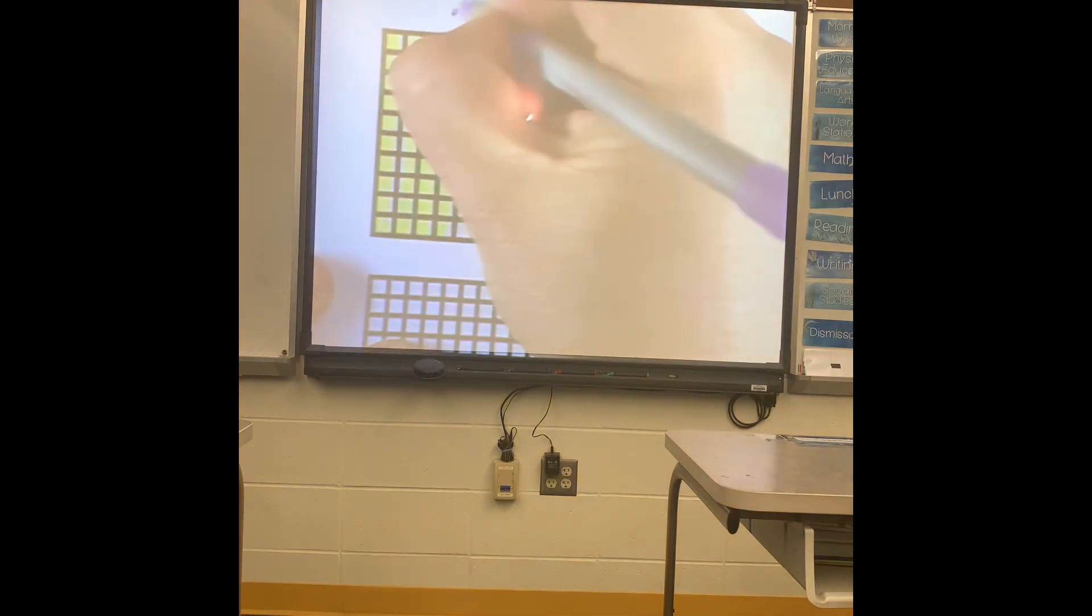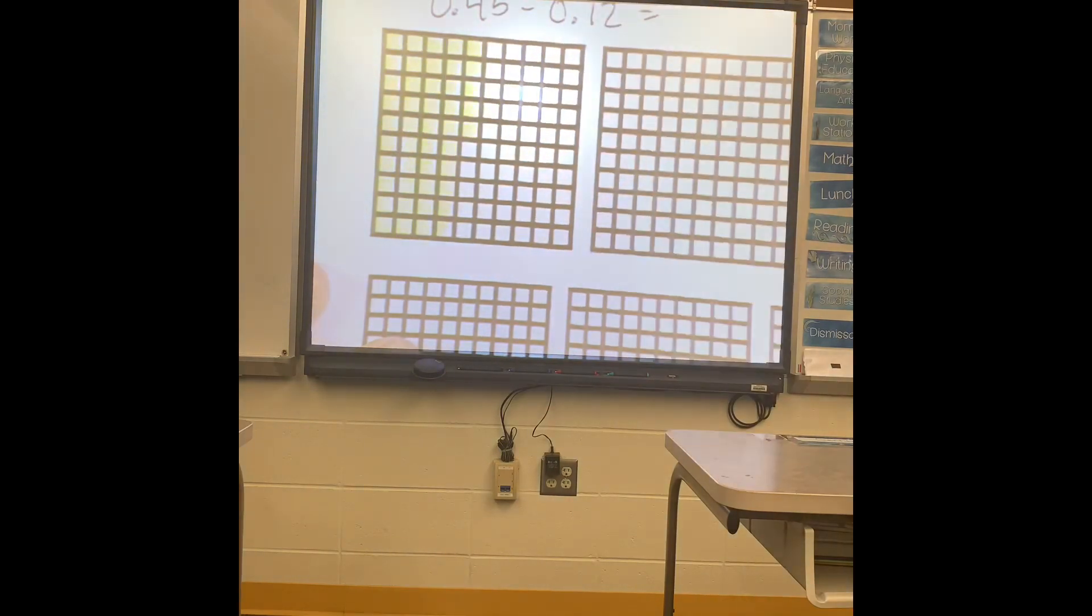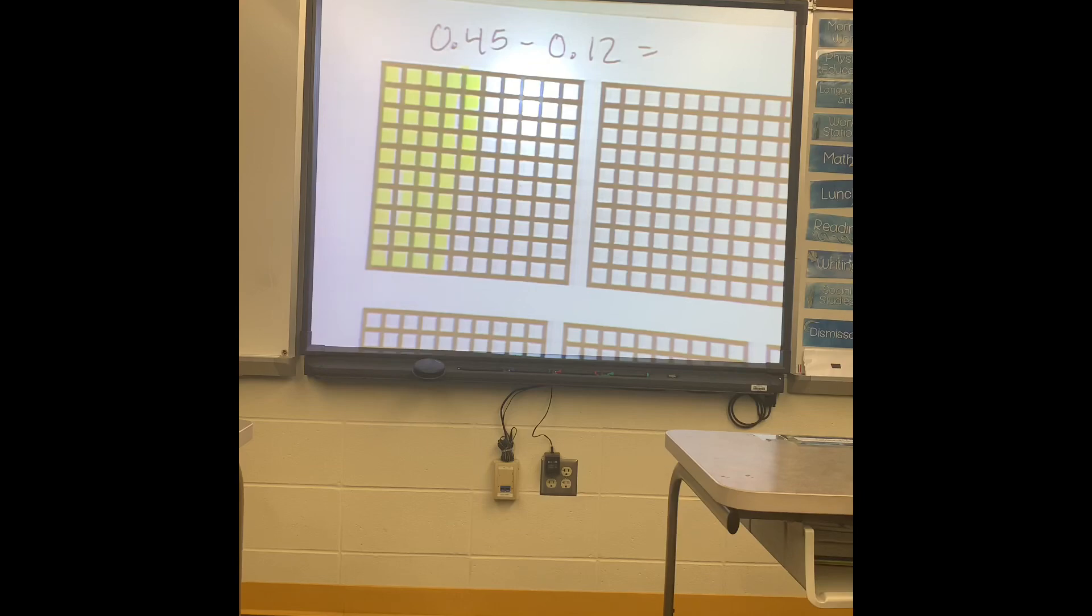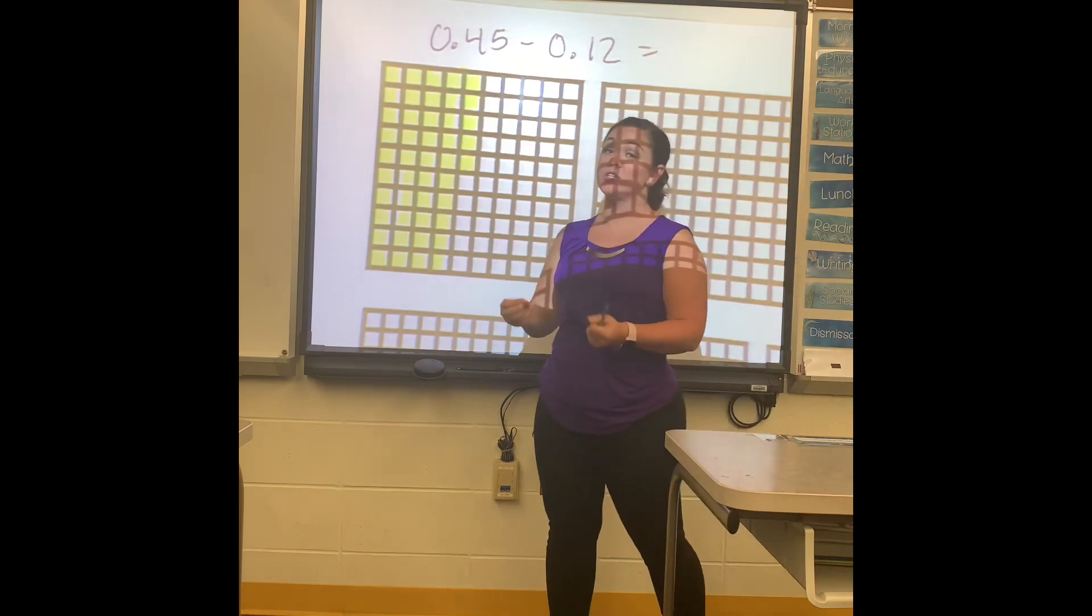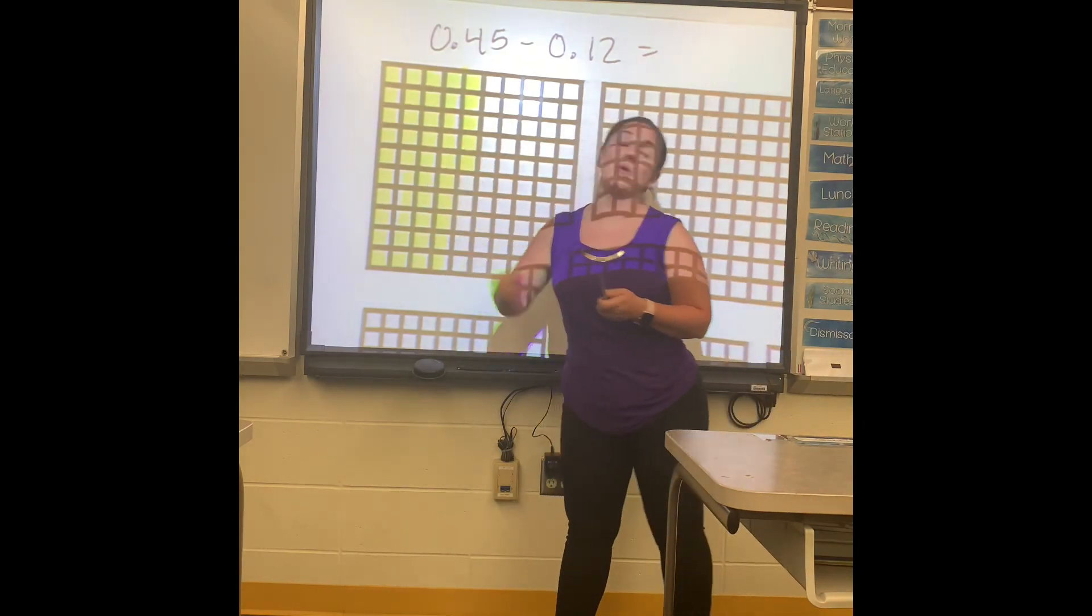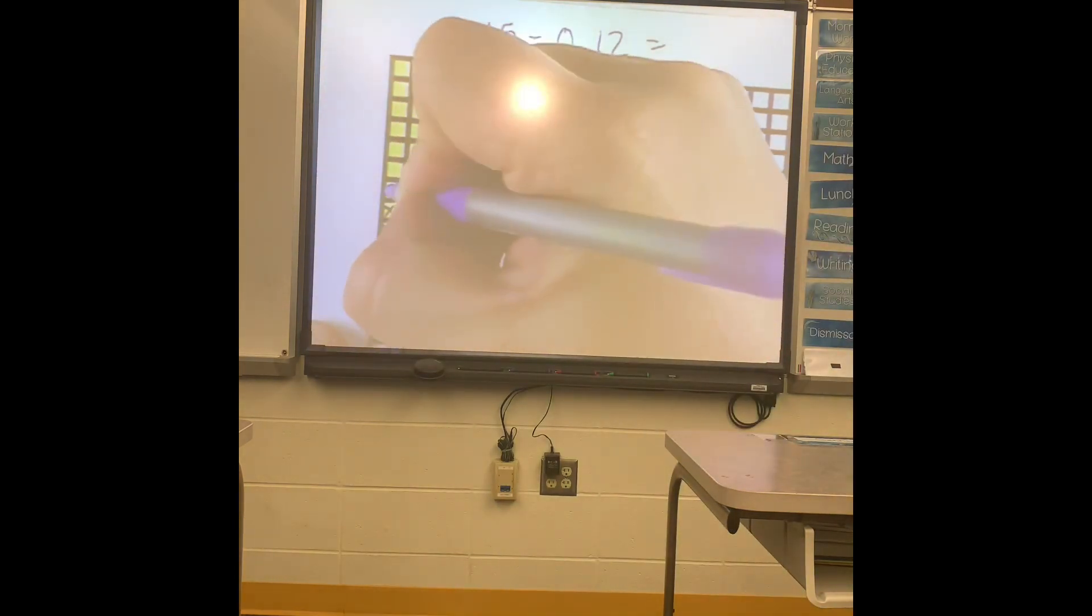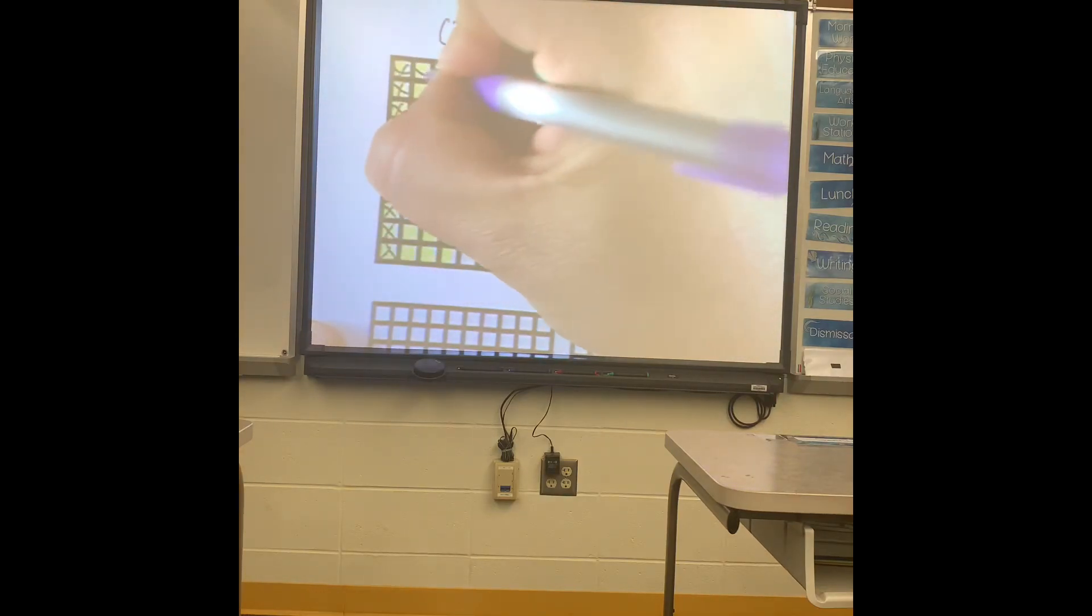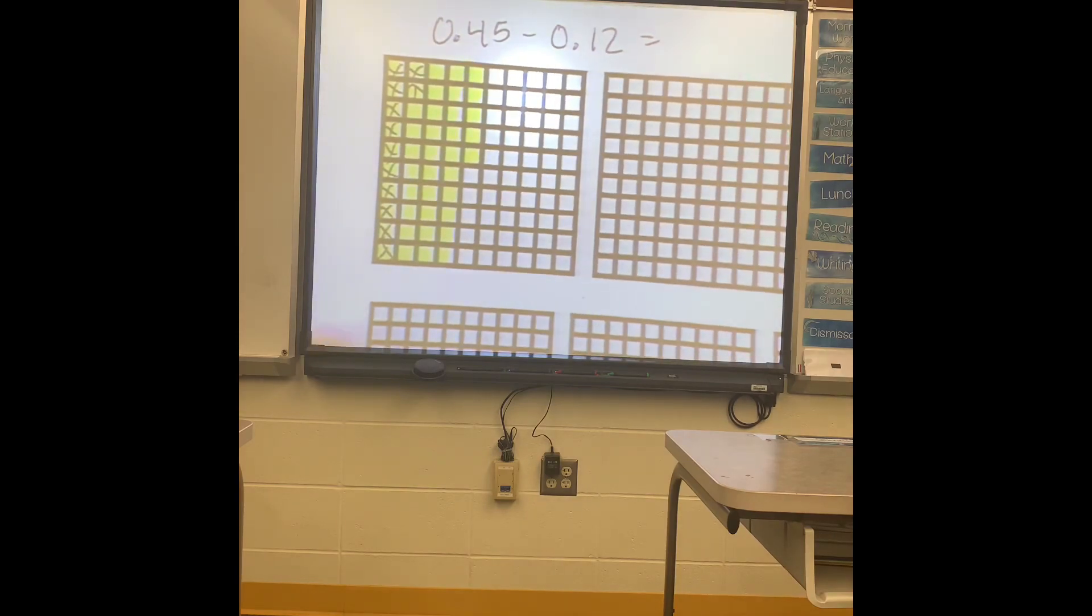Now, if you remember, my problem is 0.45 minus 0.12. I have two numbers after the decimal, so I'm good. Now I need to take away 12. So how the book taught them is you're going to X out 12. So let's see. One, two, three, four, five, six, seven, eight, nine, ten, eleven, twelve.